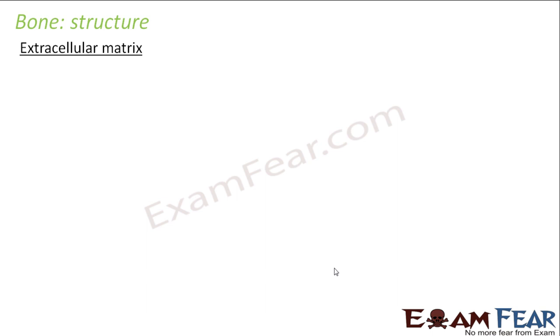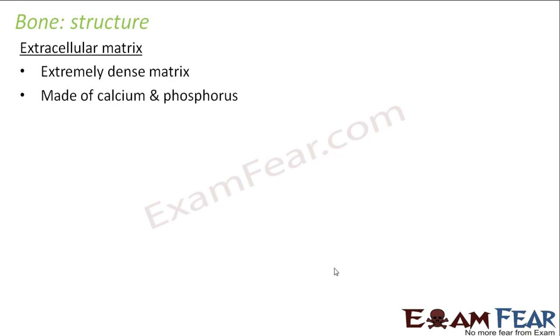Now let us look at the structure of a bone. Bone, being a connective tissue, will have an extracellular matrix with cells embedded in that matrix. In the case of bone, we have an extremely dense matrix, and that is why bone is so hard. This matrix is made up of calcium and phosphorus. That is why when people are quite old, doctors prescribe calcium tablets to make their bones stronger — because the strength of the bone lies in the extracellular matrix, and that matrix is made up of calcium and phosphorus. Taking calcium tablets makes the extracellular matrix stronger and therefore makes the bone stronger.